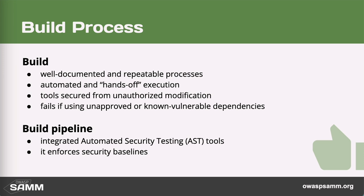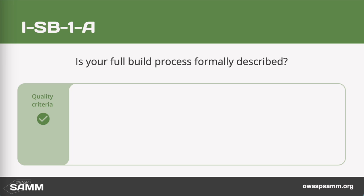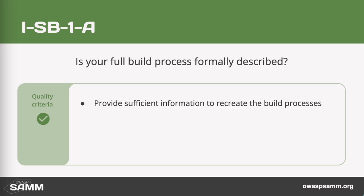The first maturity level asks whether the build process has been formally described — that there is sufficient information to recreate the build process and that the documentation is accessible and up to date. You might also want to ensure that nobody can change it. Note that this could be a completely manual process: you could have a 50-step manual that says you need to type this command, then run the tests, then run this tool. It doesn't have to be automated for level one maturity.